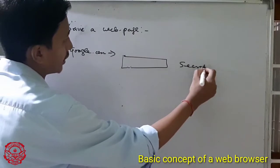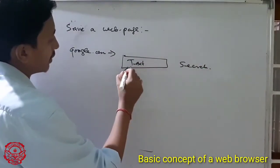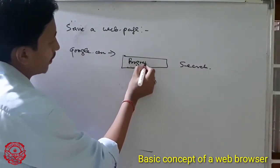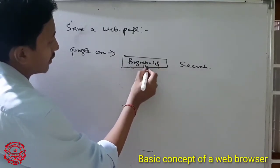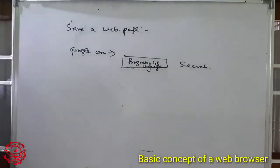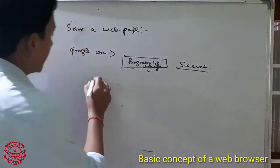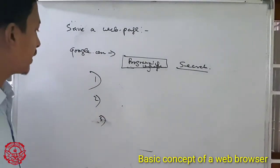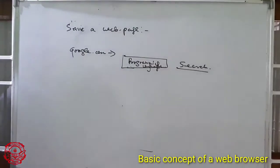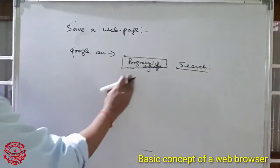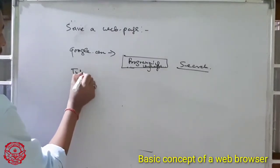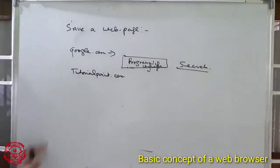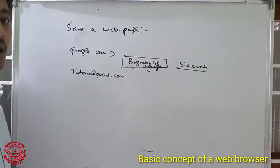In Google.com, there is a text box and a search option. You write any text — select a programming language, for example. After that you search and click the search button. There are many websites available. You just click a particular website, for example tutorial.com. Tutorial.com is a programming web page where you will get any programming language.